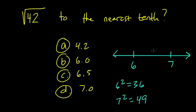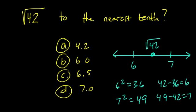So it's somewhere between 6 and 7. And I notice that if I take 42 and I subtract 36 from it, I get 6. And if I take 49 and subtract 42 from it, I get 7, which means that the distance between the square root of 42 and 6 and 7 is about equal.